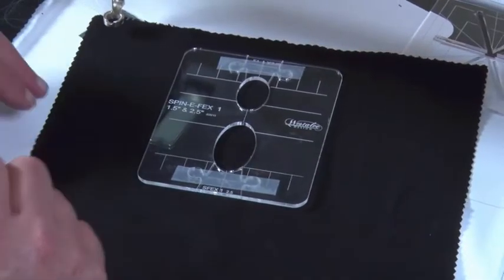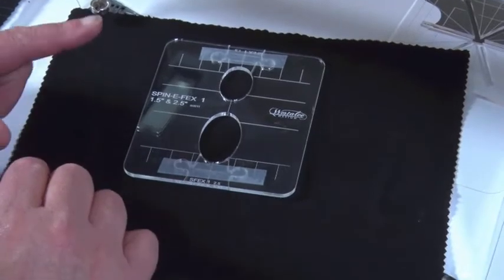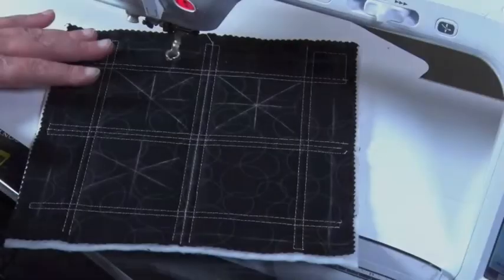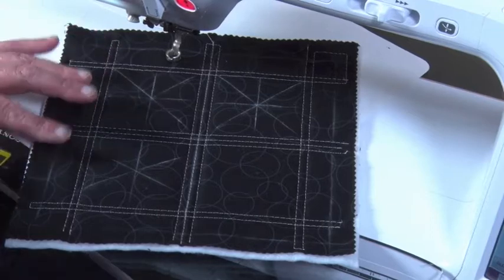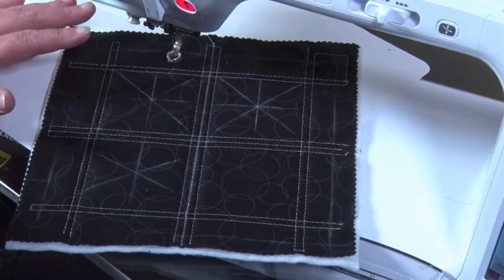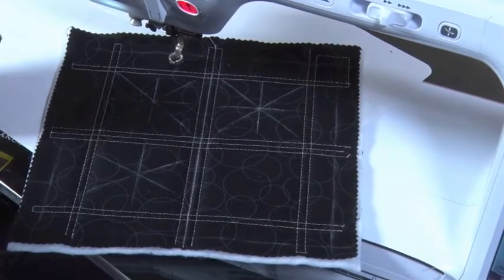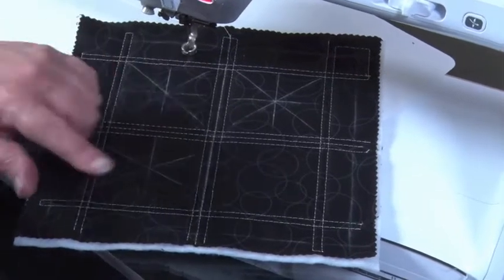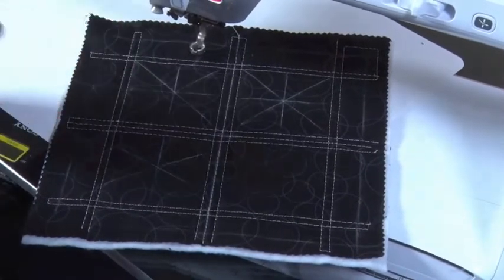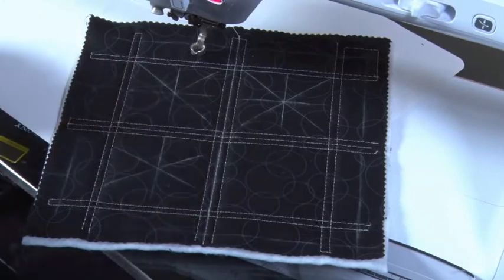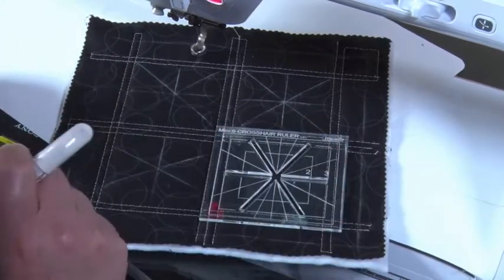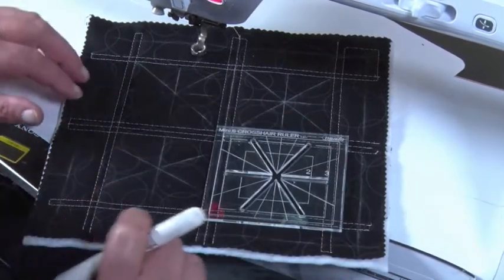To start with, I'm going to use our crosshair ruler to mark my spinifex in. I'm going to show you how to use this template in a couple of ways. I'll sew the two and a half inch one and the one and a half inch one. I've just marked and sewn a three inch square grid pattern.